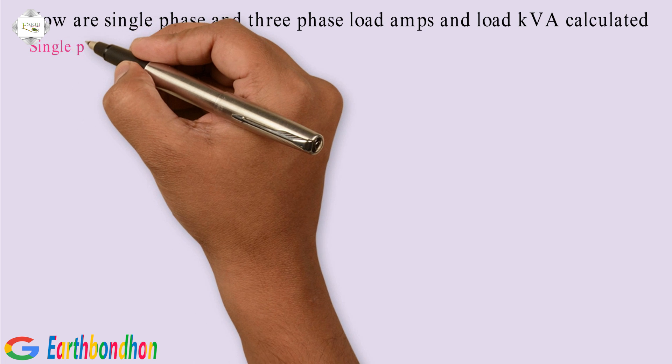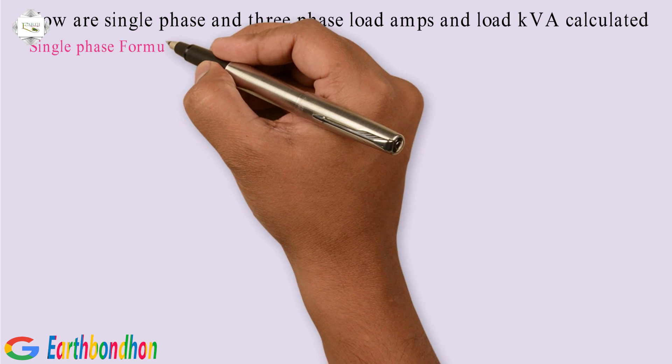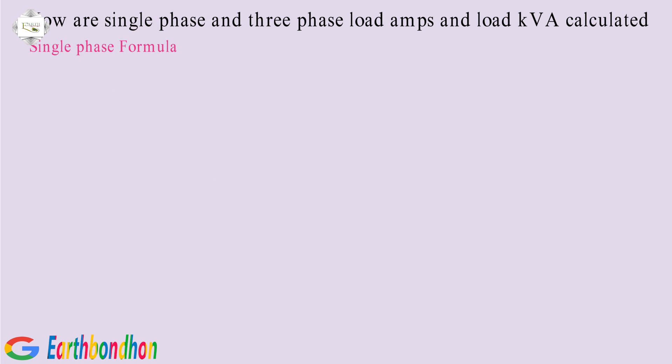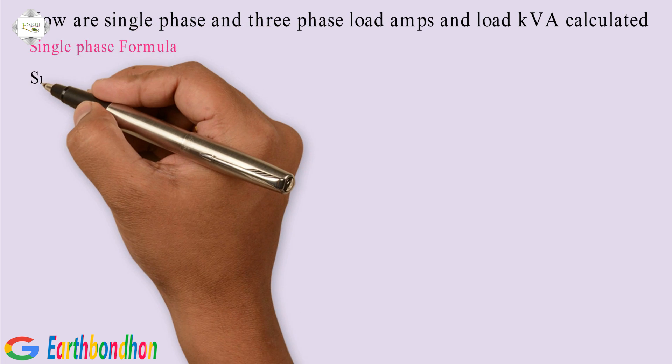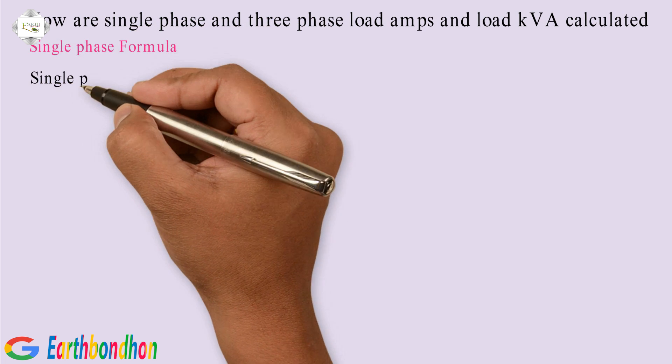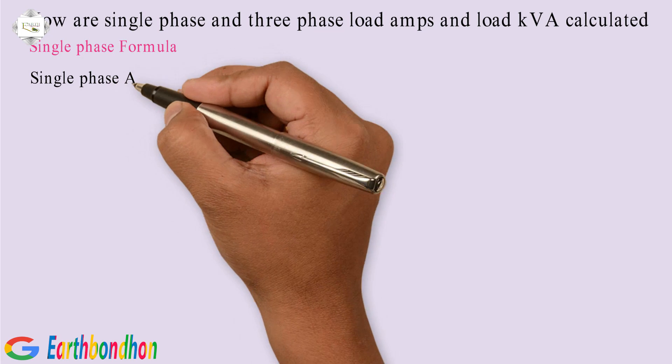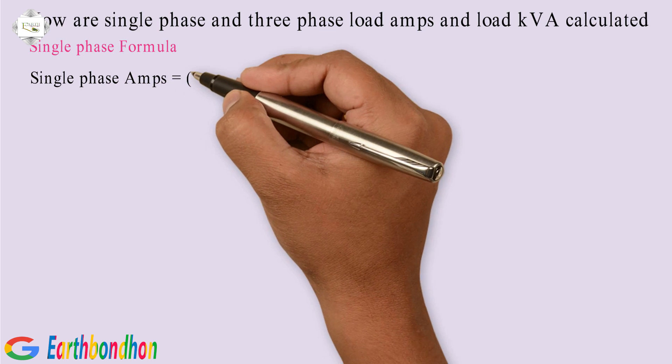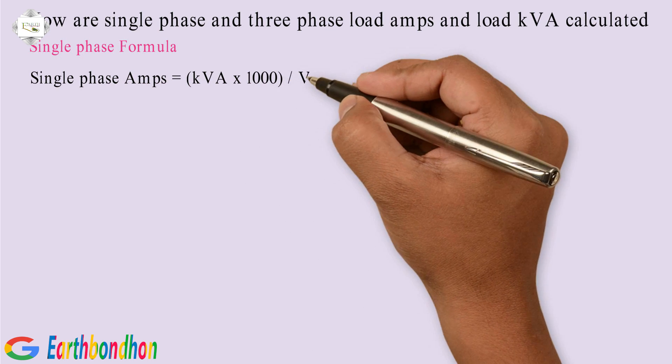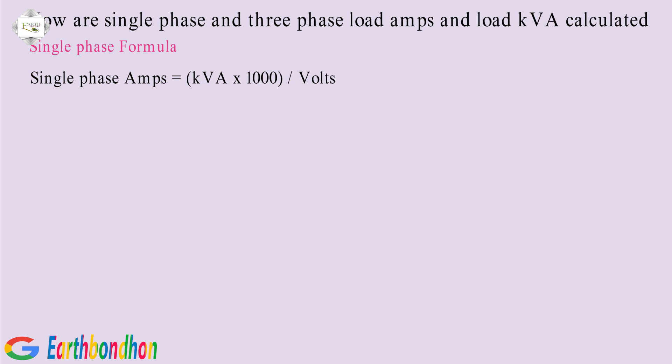Single phase formula: single phase amps equals KVA multiplied by 1000, divided by volts.